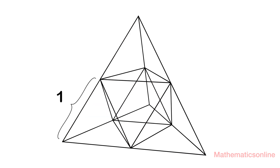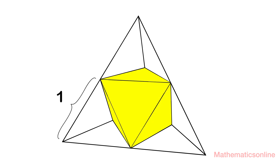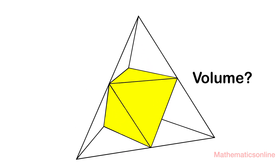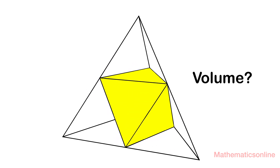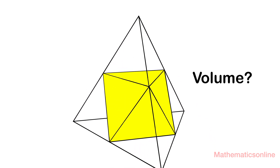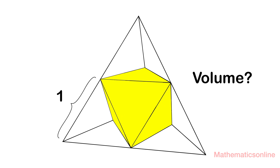Now there's an empty space in the middle, and it actually forms the shape of an octahedron. We want to determine the volume of the octahedron because there is a nice relationship between the volume of the octahedron and the 4 tetrahedrons.